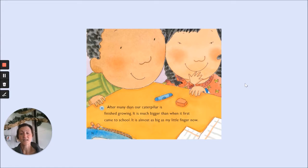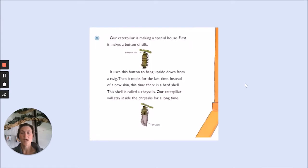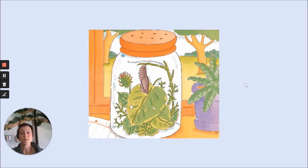After many days, our caterpillar is finished growing. It is much bigger than when it first came to school — almost as big as my little finger now. Our caterpillar is making a special house. First, it makes a button of silk. It uses this button to hang upside down from a twig. Then it molts for the last time. Instead of a new skin, this time there is a hard shell. This shell is called a chrysalis. Our caterpillar will stay inside the chrysalis for a long time. The chrysalis is also called the pupa.